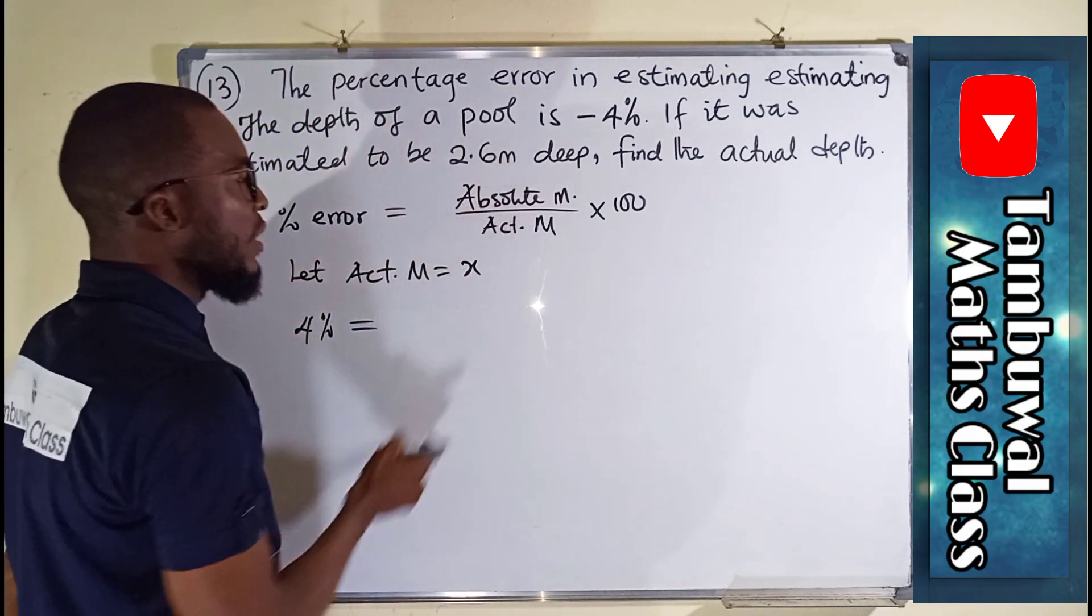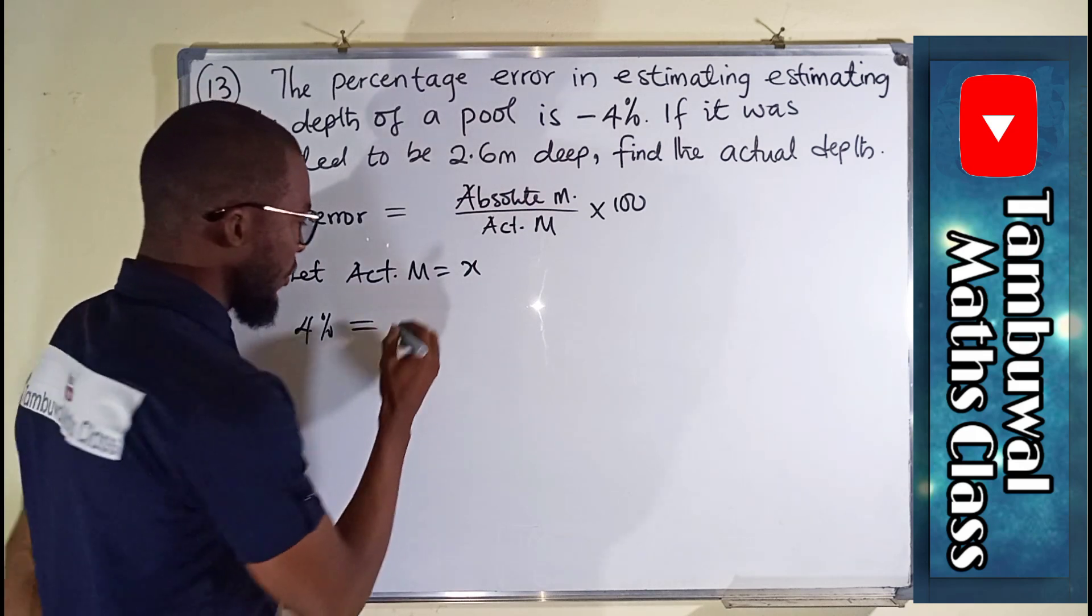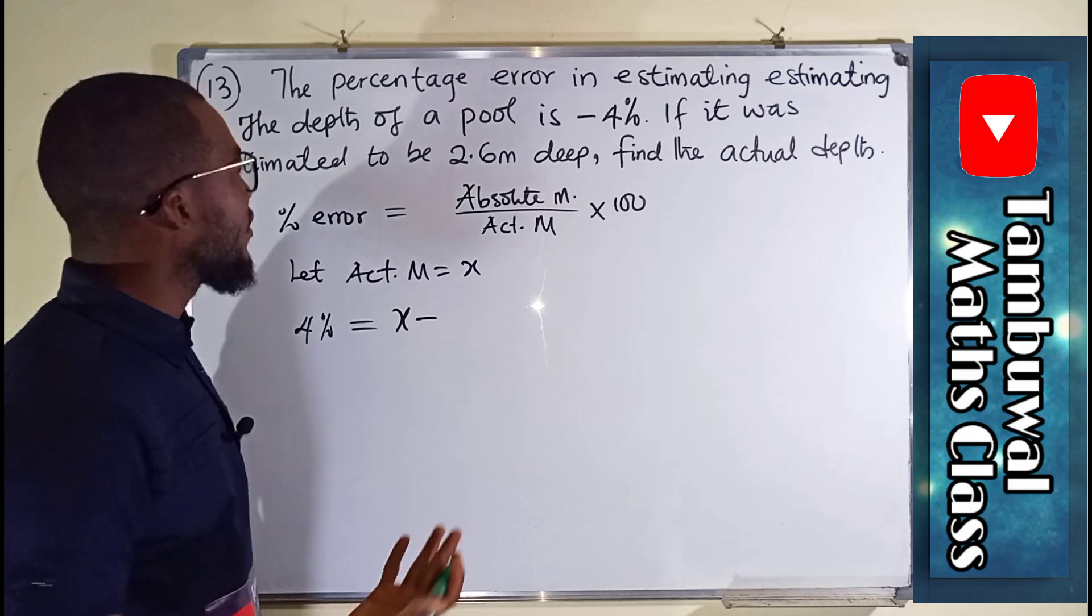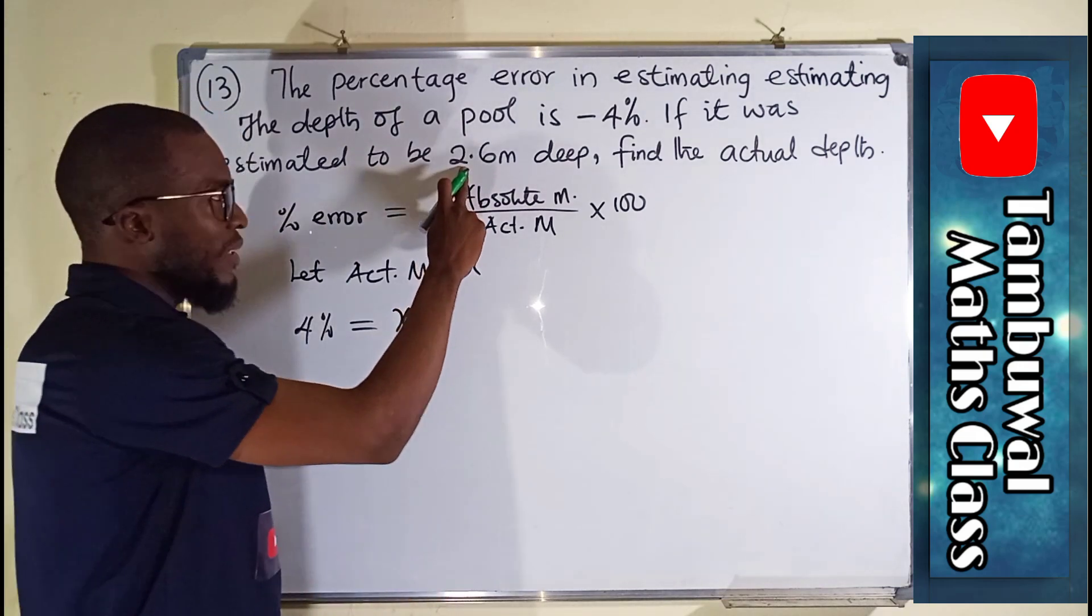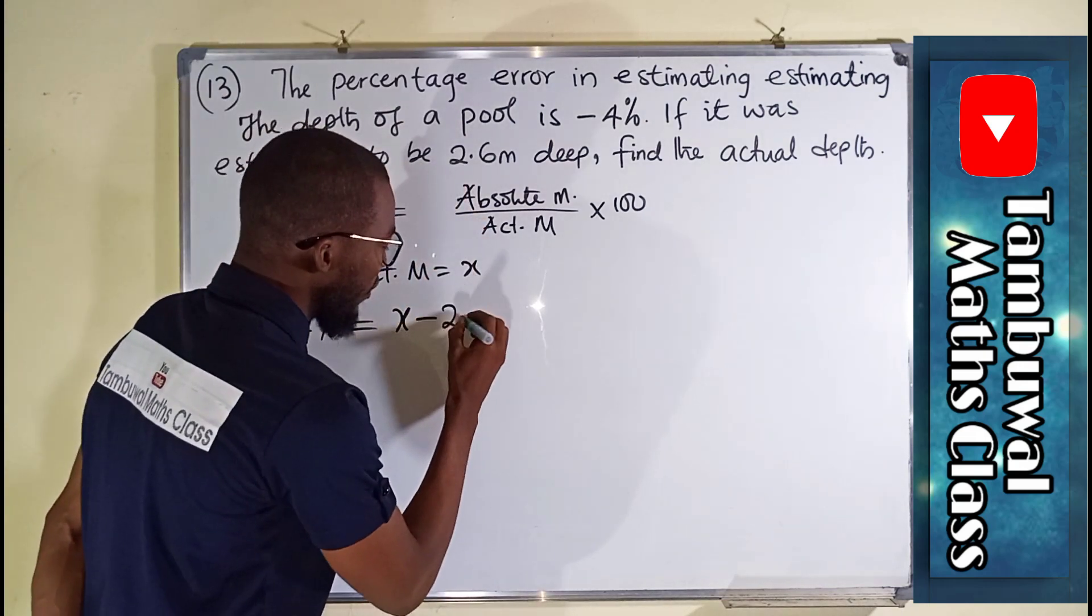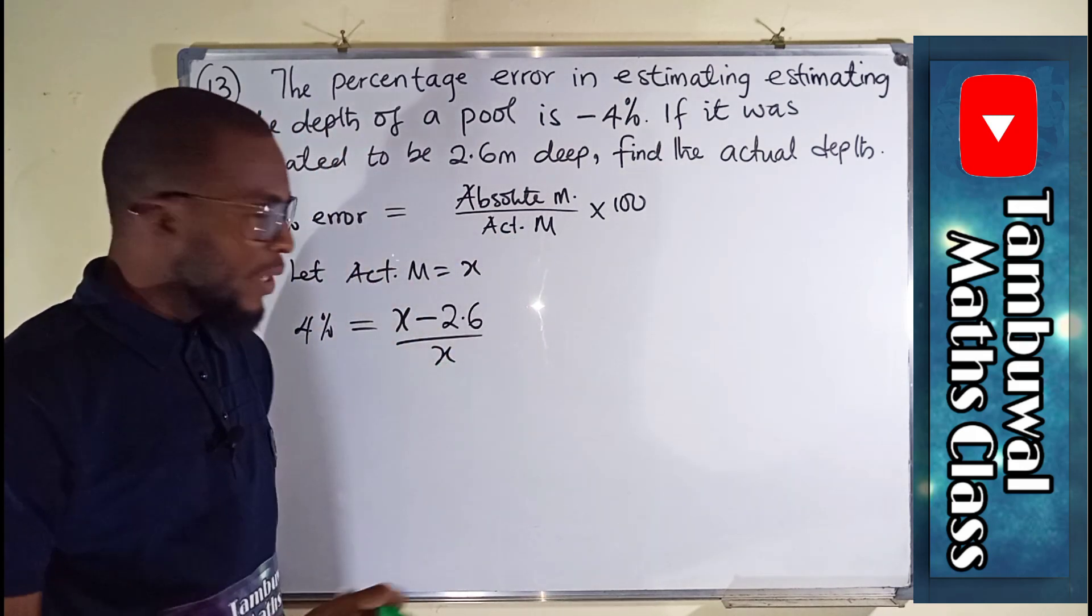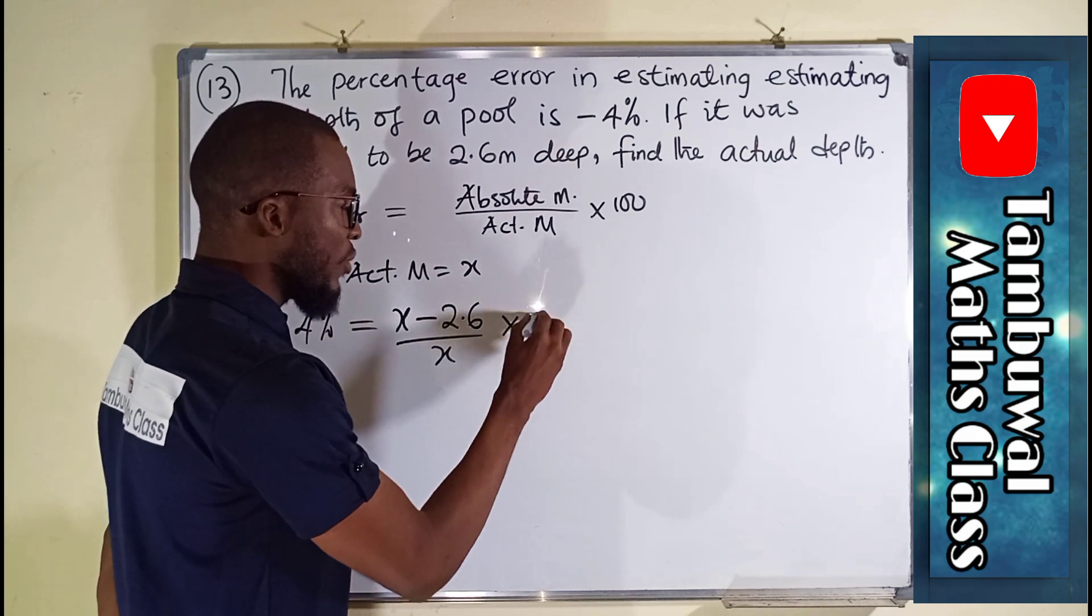This is equal to the actual measure, which we have as x minus the underestimated or overestimated. In this case, we have underestimated, which is 2.6 over the actual measure, which is x. We don't know it. We are looking for it times 100.